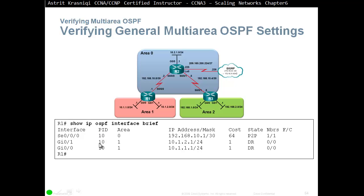'Show ip ospf interface brief' is great to see which interfaces are enabled for OSPF and which areas they are in. We can see the process ID is all process 10. Serial 0/0/0 is enabled for area 0; G0/1 and G0/0 are enabled for area 1. You can see the IP address, mask, and cost of each interface — 64 on the serial and 1 for GigabitEthernet. Network type is point-to-point on the serial, and DR is shown for multi-access networks. We have one neighbor on the serial.